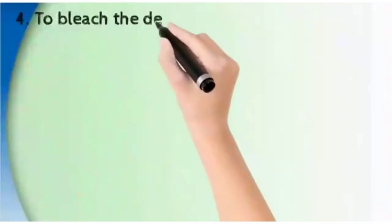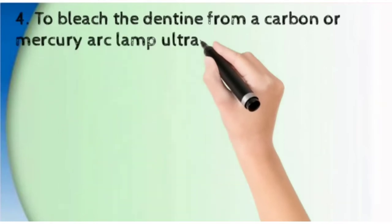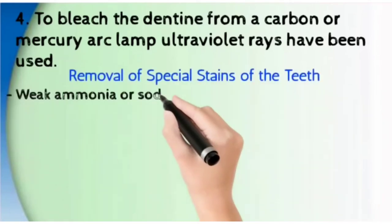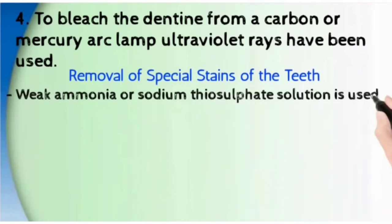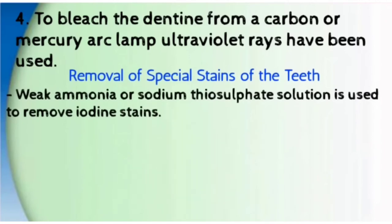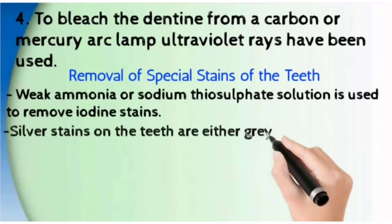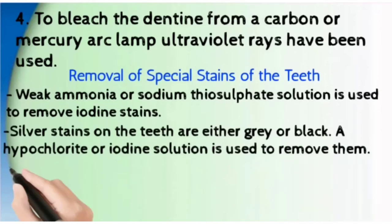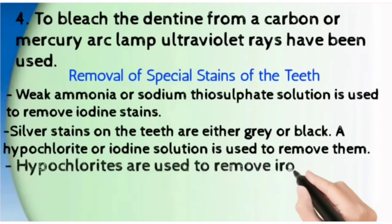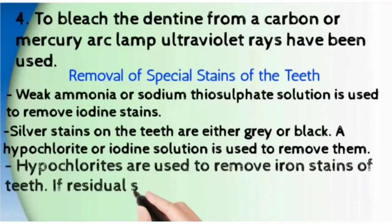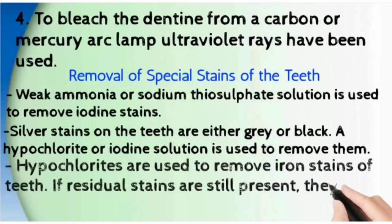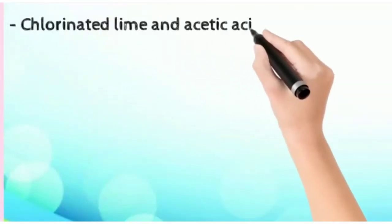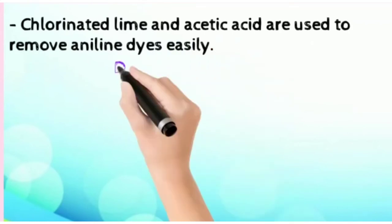To bleach the dentine from carbon or mercury clamp, UV rays in trays are used. For removal of special stains of the teeth: weak ammonia or sodium thiosulphate solution is used to remove iodine stains. Silver stains are either grey or black — hypochlorite or iodine solution is used to remove these stains. Hypochlorites are used to remove iron stains of teeth. If any residual stains are still present, they can be removed by oxalic acid. Chlorinated lime and acetic acid are also used to remove aniline dyes very easily.